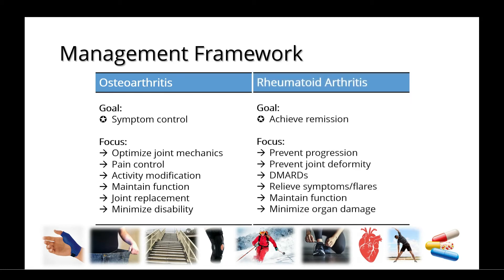With rheumatoid arthritis, the goal is to achieve remission. This is commonly done by using DMARDs, or disease-modifying anti-rheumatic drugs, that help to prevent progression and joint deformity. It's also important to relieve symptoms and flares to maintain function and minimize organ damage. Check out our DMARD videos for more information on the types of drugs used to treat this condition.